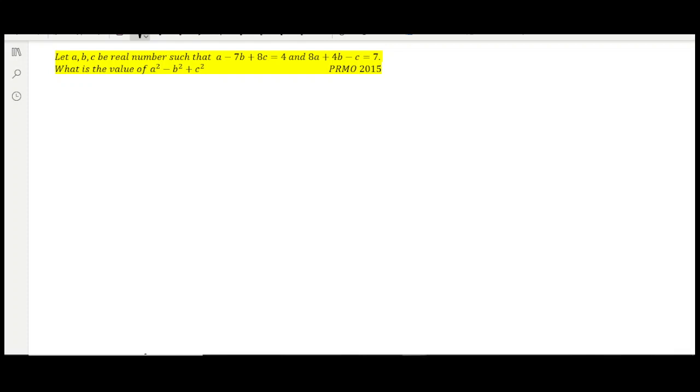Hello students, what's up? Today we are going to take an example from PRM 2015. So we have two equations: a minus 7b plus 8c equals 4, and 8a plus 4b minus c equals 7.